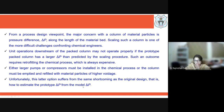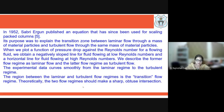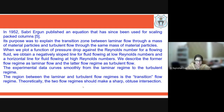To tackle this issue, in 1952 Sabri Ergun published an equation that has been used for scaling packed columns. Its purpose was to explain the transition zone between the laminar flow regime and the turbulent flow regime through the same mass of material particle. When we plot a function of pressure drop against Reynolds number, we see a negative slope line for fluid flowing at low Reynolds number and a horizontal line for fluid flowing at high Reynolds number — the former being the laminar flow regime and the latter being the turbulent flow regime.